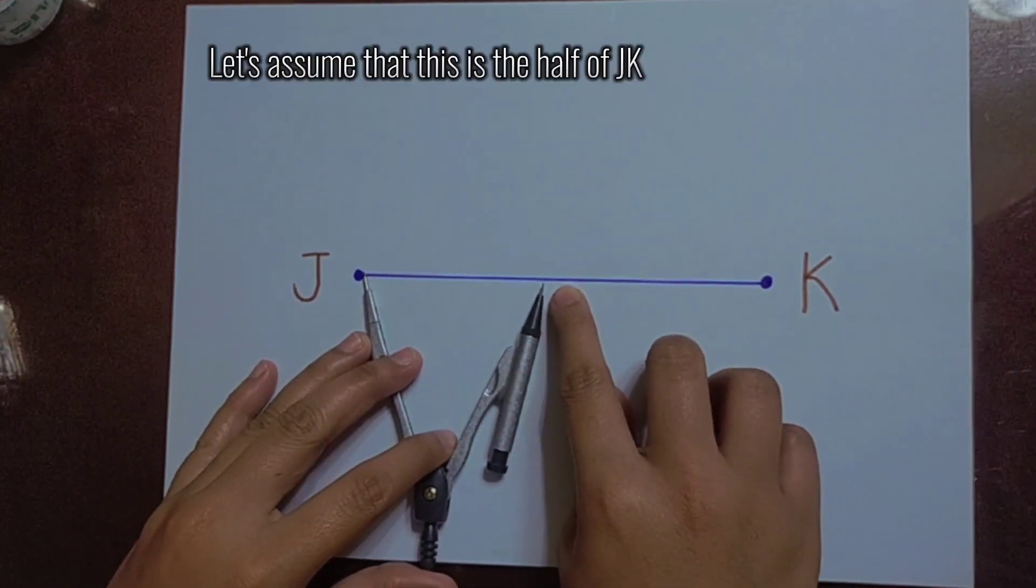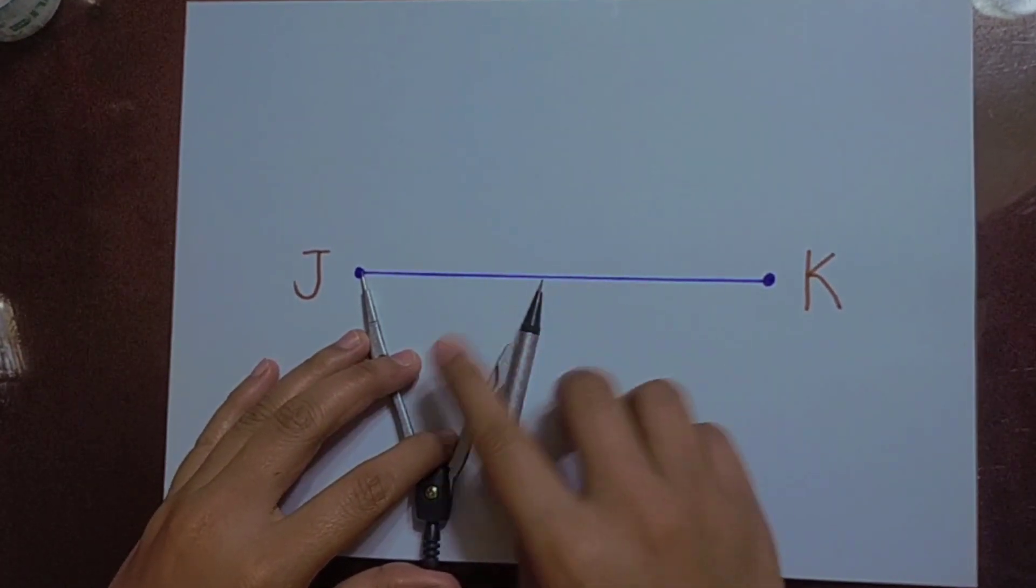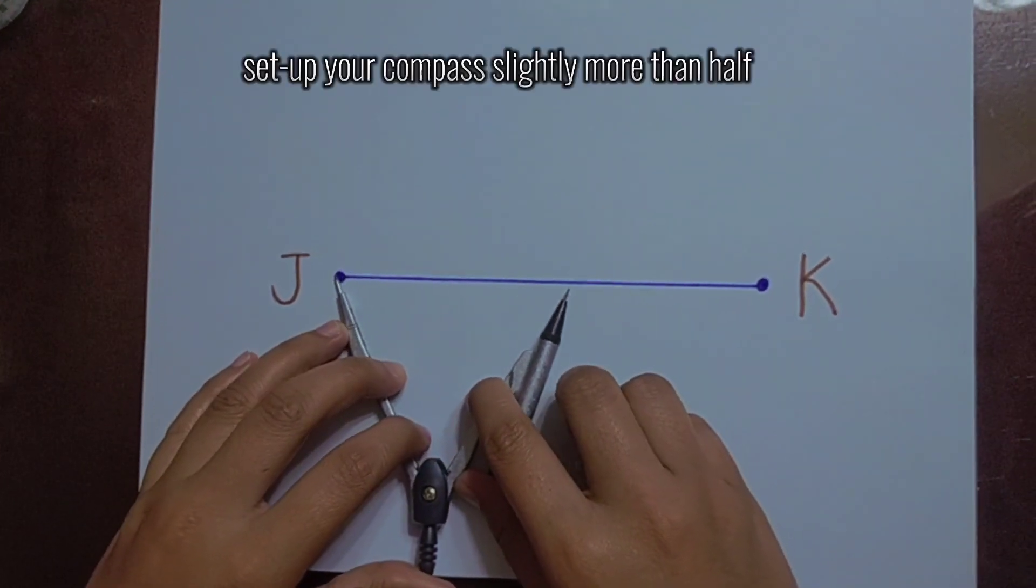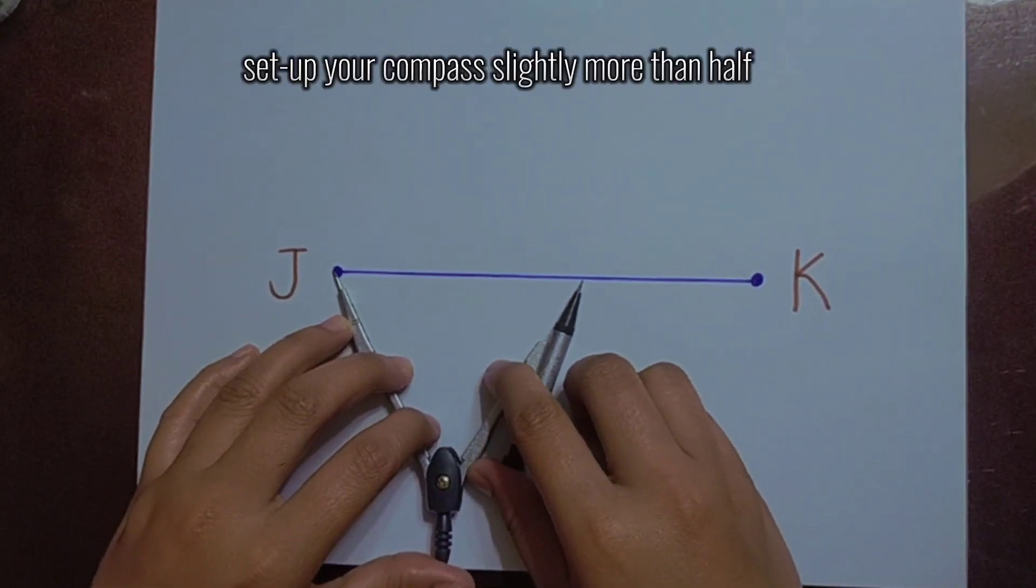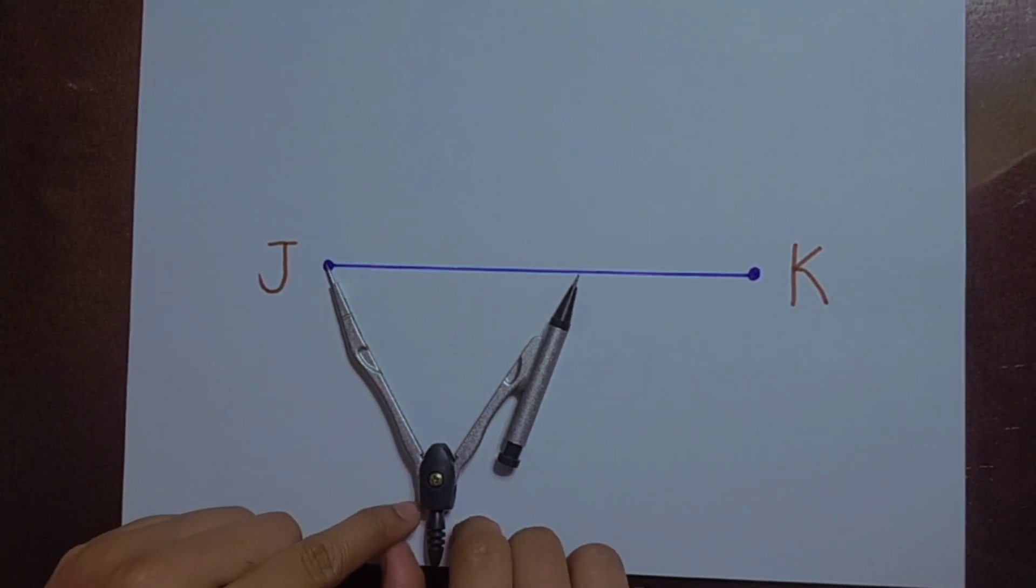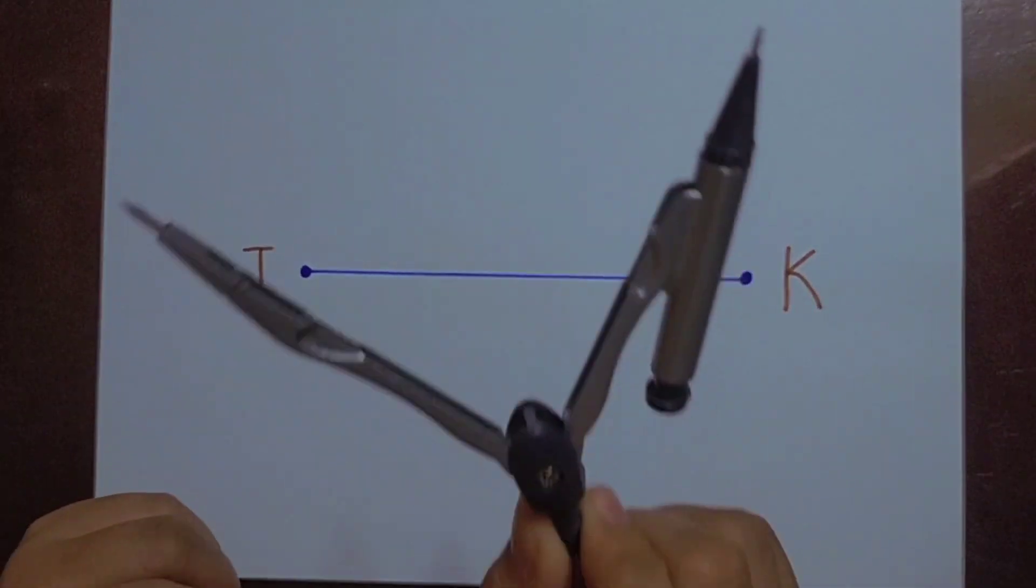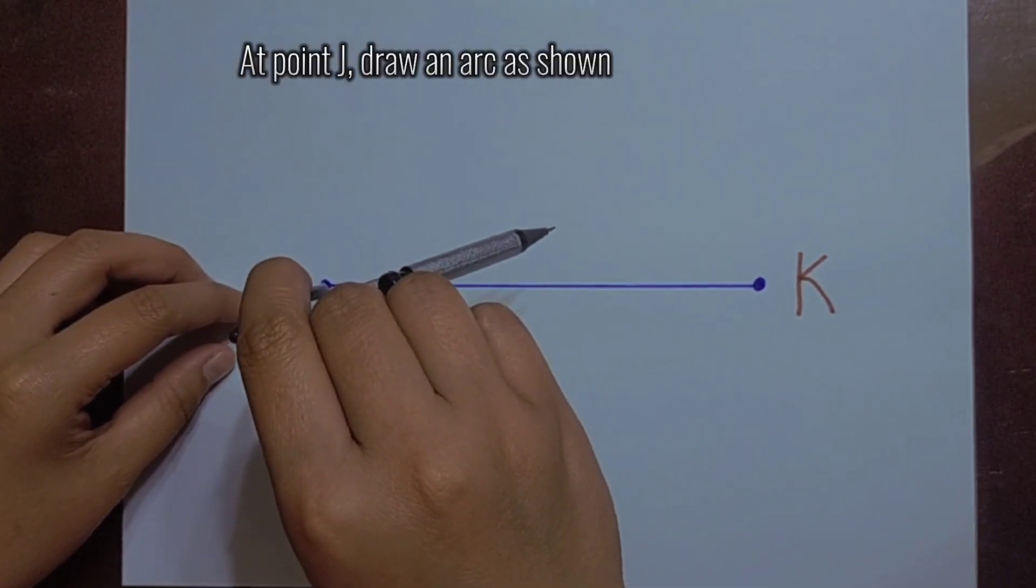Step 2. Let's assume that this is the half of JK. Set up your compass slightly more than half. At point J, draw an arc as shown.